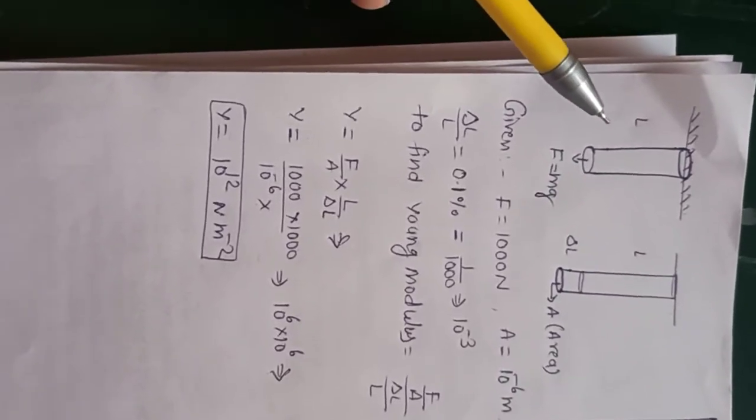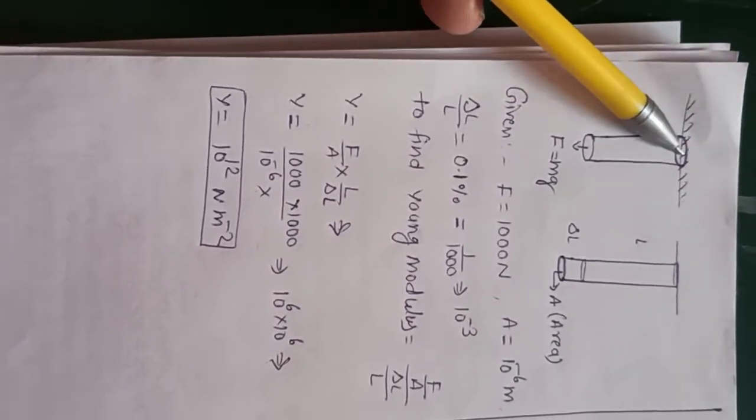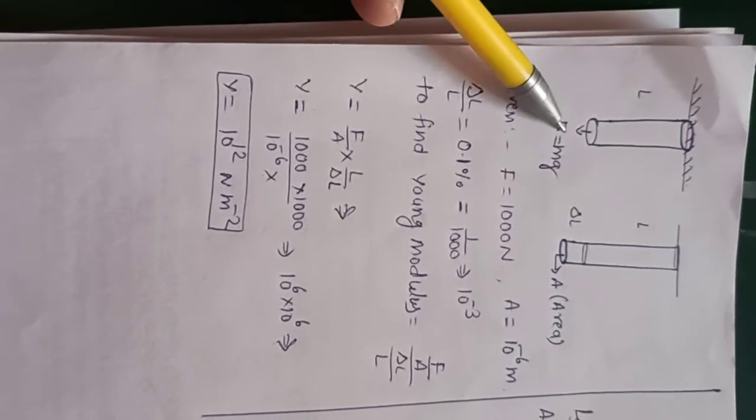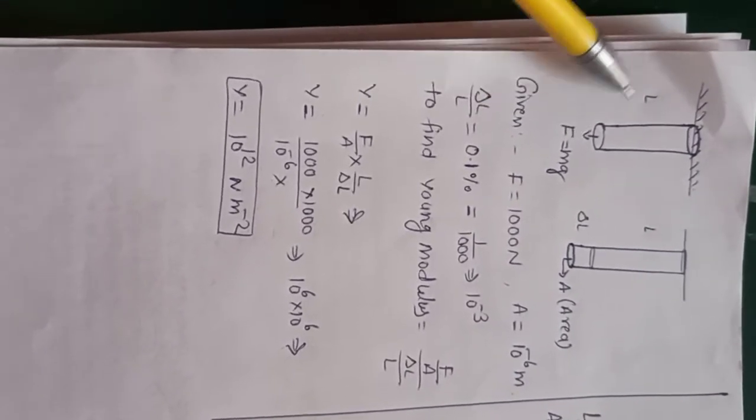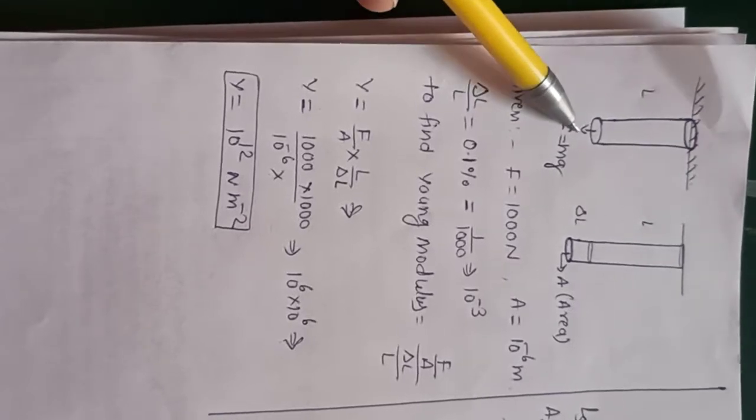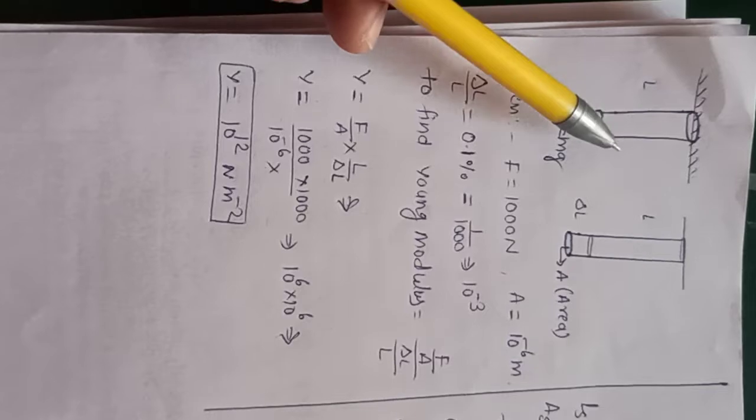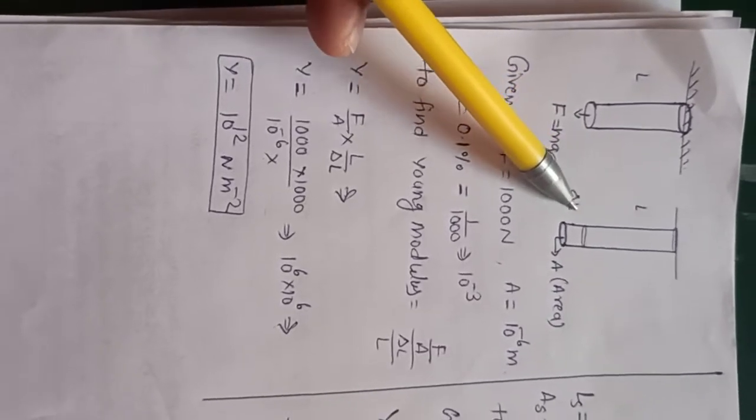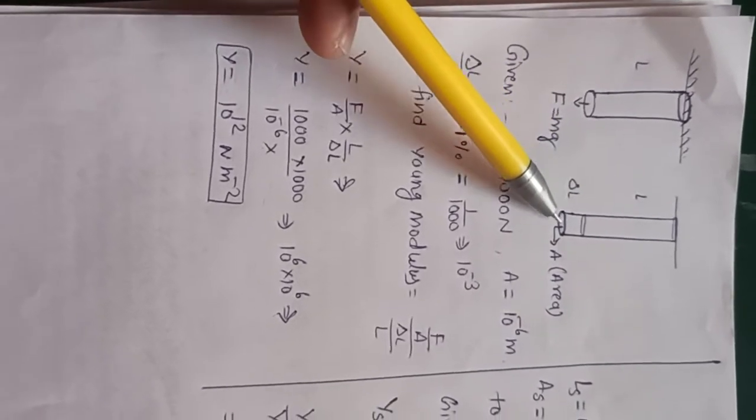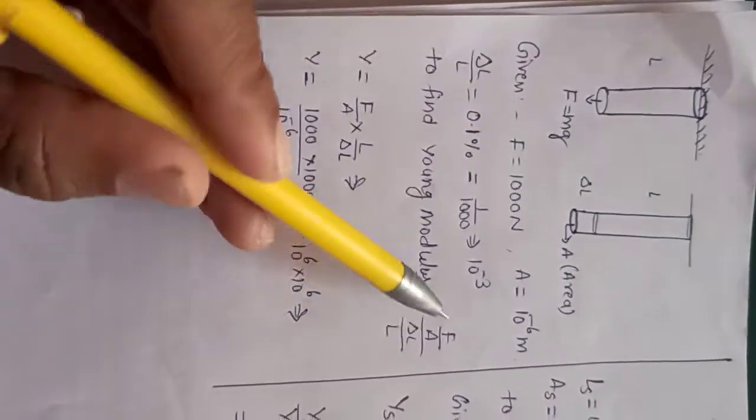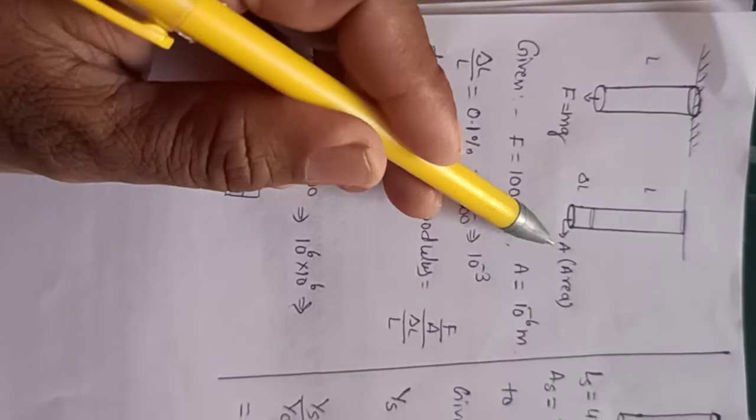In this question, it is given that this is the length of a wire and the force is applied. Let the total length be L. After applying some force downwards, there is a change in the length, and the length is now ΔL. Suppose the cross-section area is given.